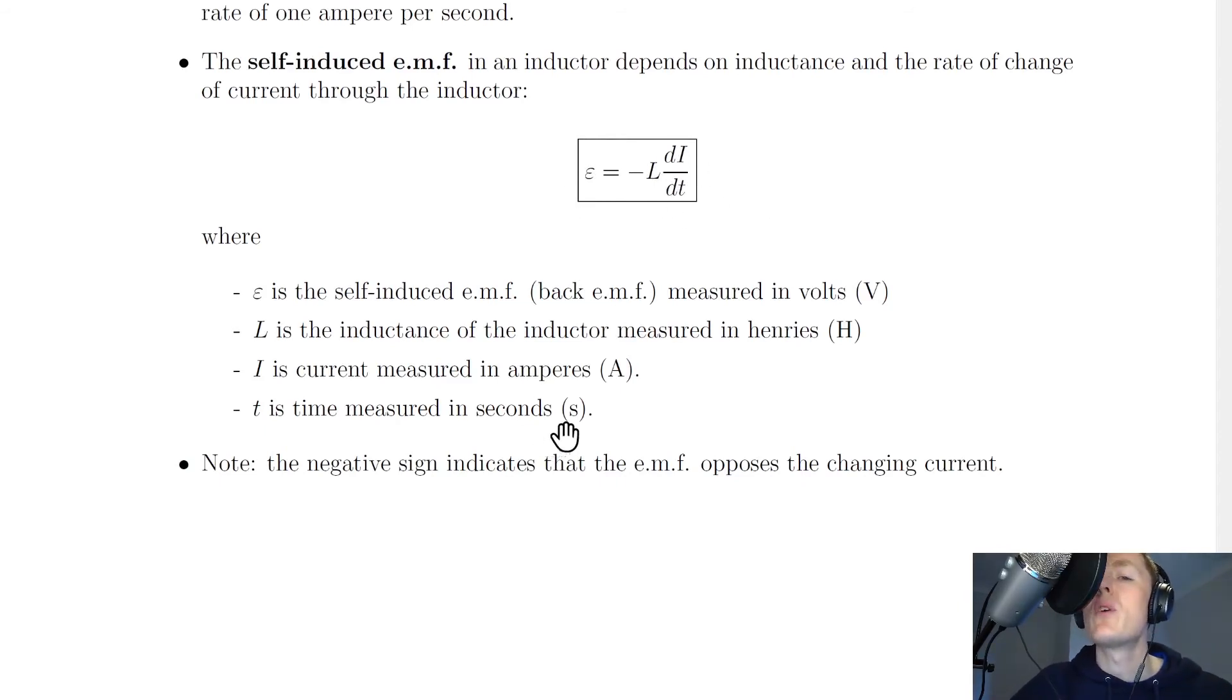I should also point out that when doing calculations with this equation, you will get this relationship on the relationship sheet in the exam, and sometimes you'll get a value for the whole rate of change of current dI/dt, or you might get given separate values for the change in current and the change in time, and you can just put these into a fraction.